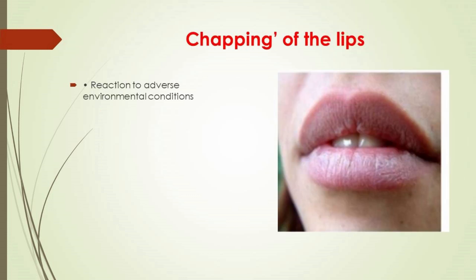Chapping of the lips is a reaction to adverse environmental conditions, caused by exposure to freezing cold or to hot, dry winds. Keratin of the vermilion loses its plasticity so that the lips become sore, cracked, and scaly. Affected persons tend to lick the lips or pick at the scales, which may aggravate the condition. Treatment: petroleum jelly and avoidance of the adverse environmental condition.